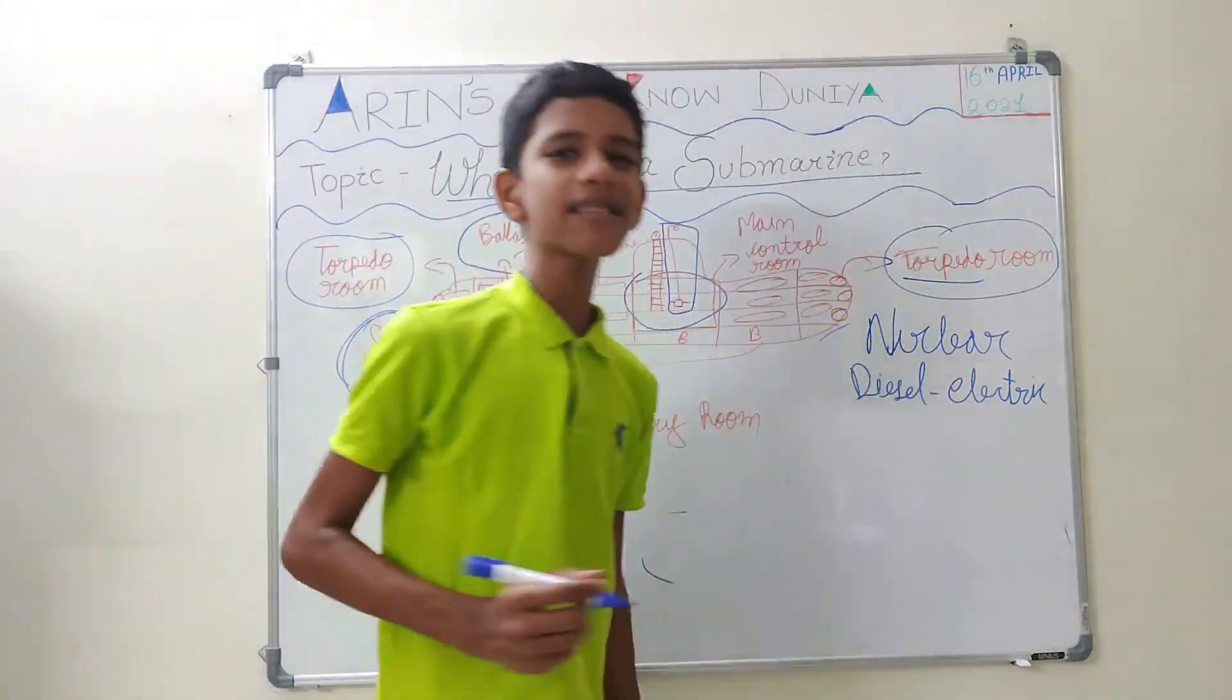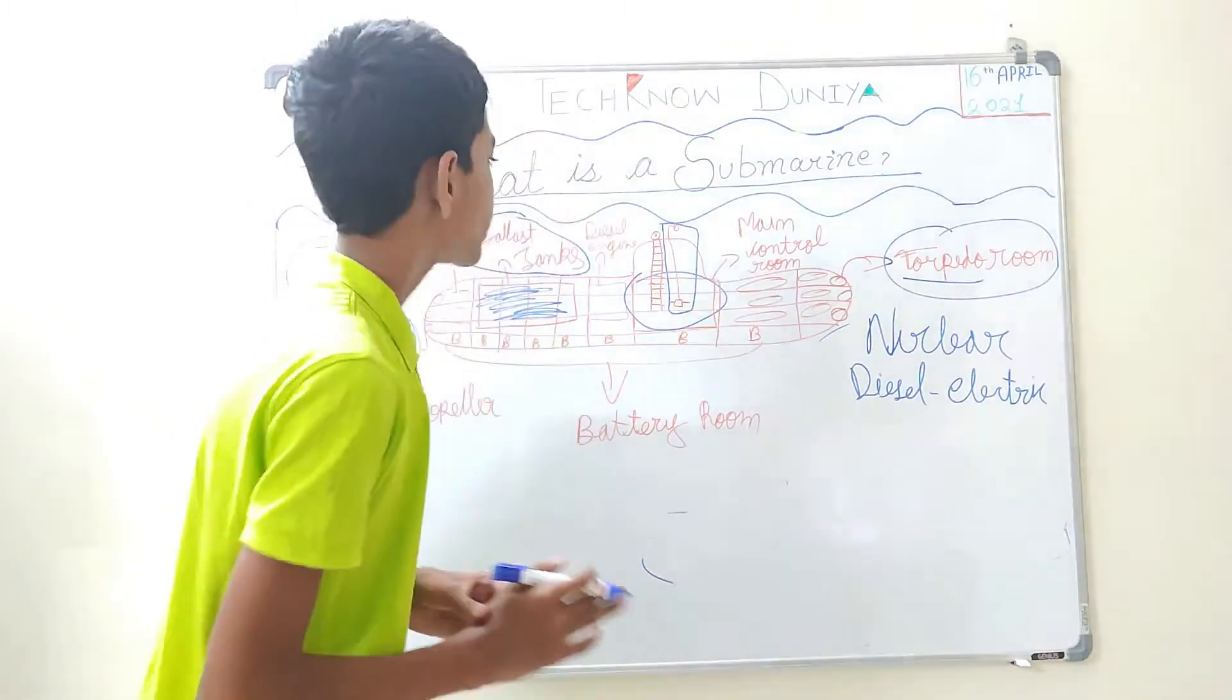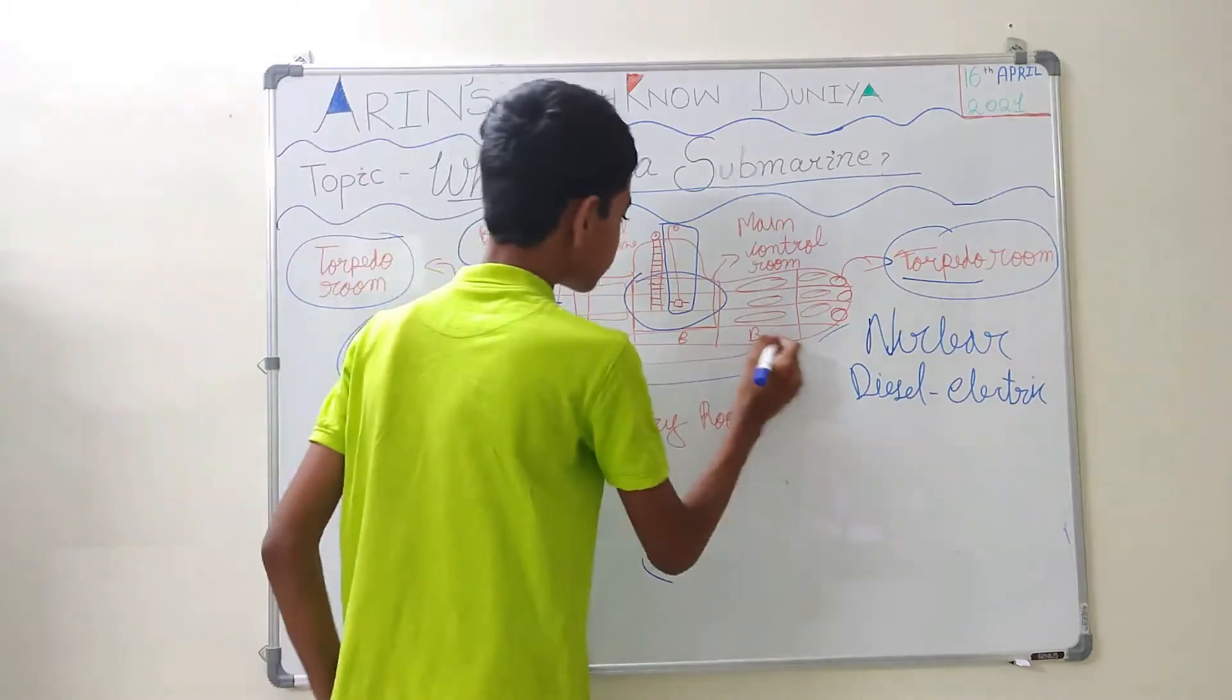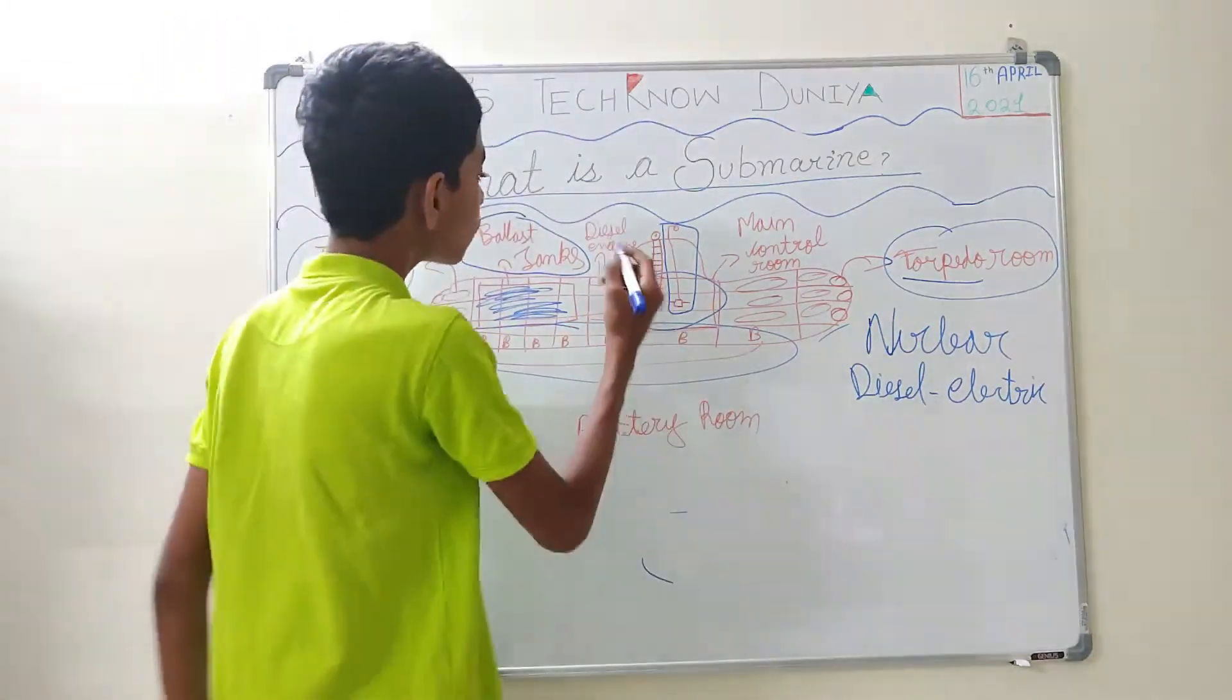And diesel electric submarines can only be for a short period of time like 40 to 50 days. But even though they have very powerful batteries inside the battery room, they need to be charged every 3 to 4 days.